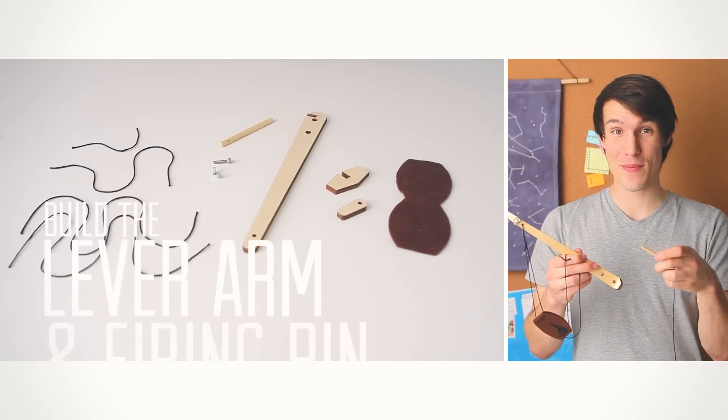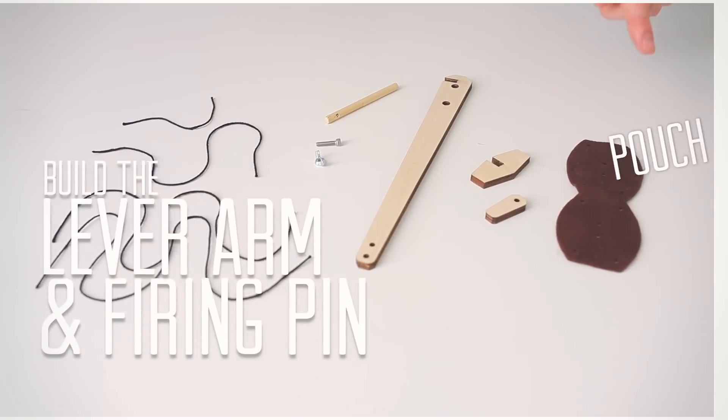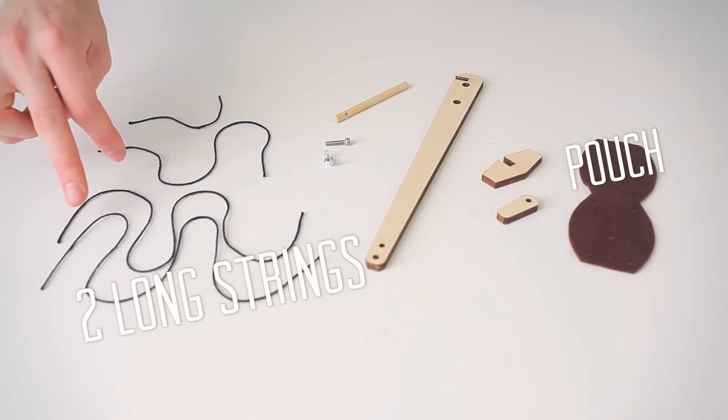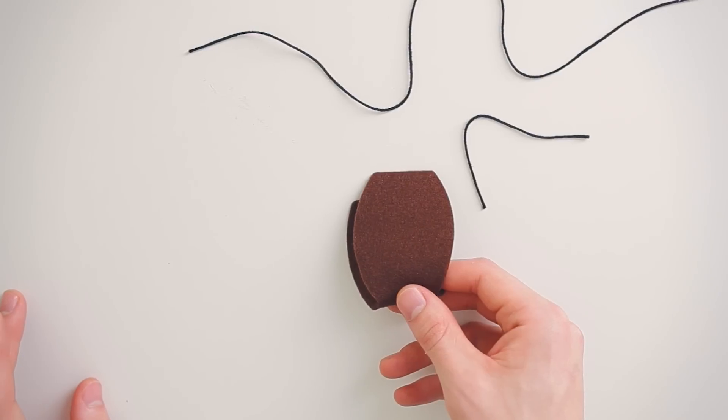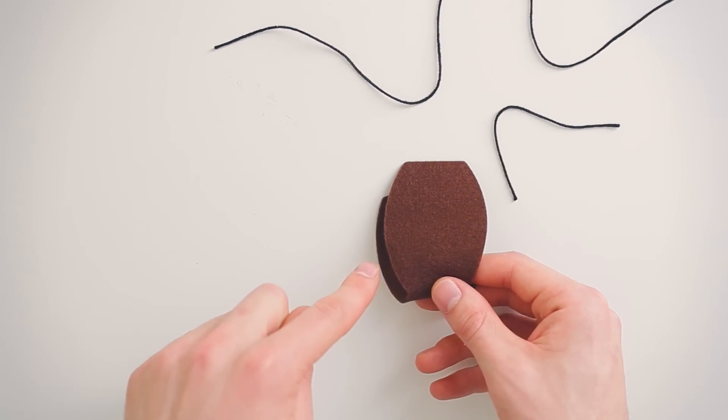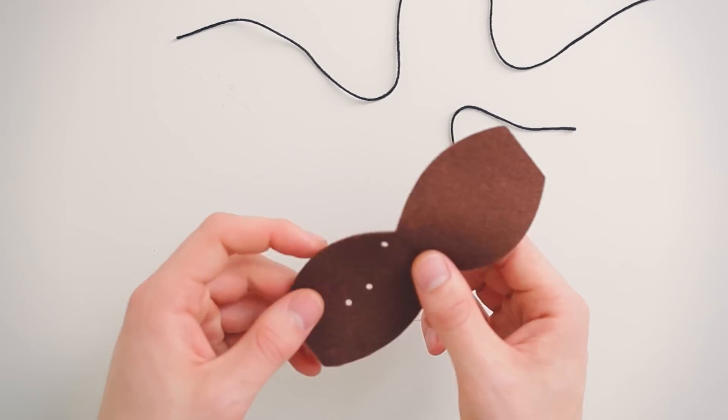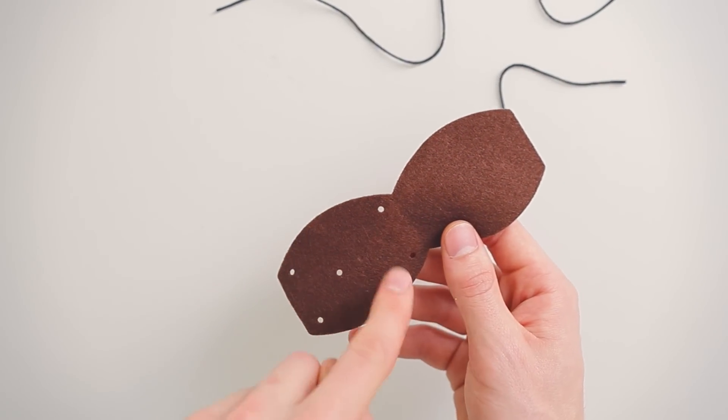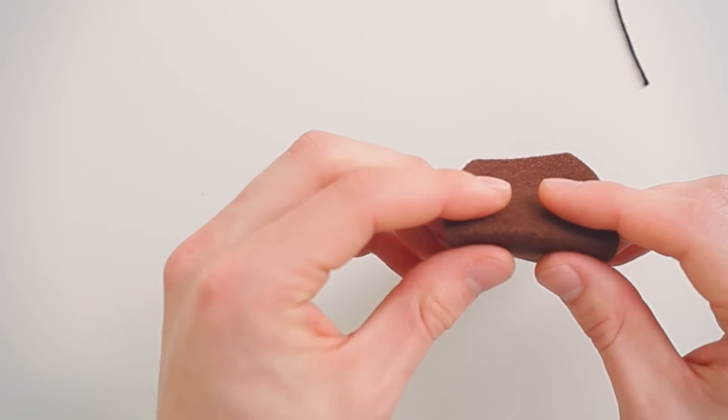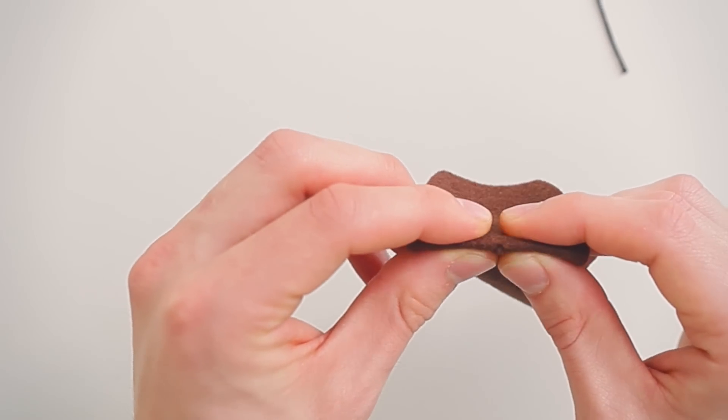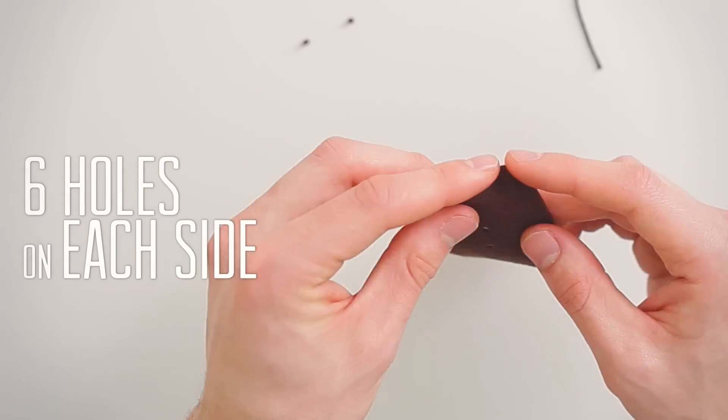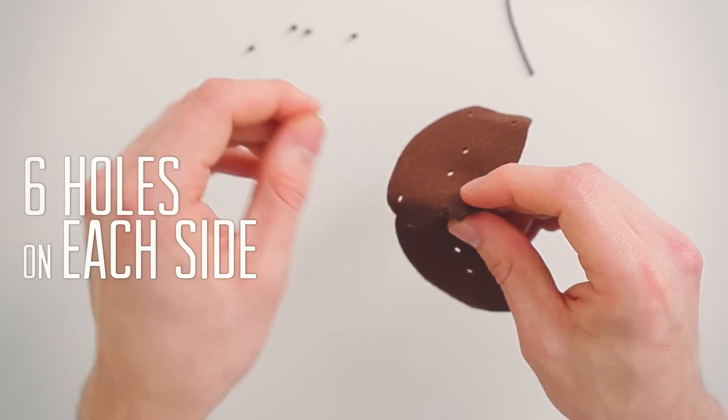Next we're going to build our lever arm and our firing pin. Let's start off with our felt pouch, our two long strings and our short string. When you get your felt pouch there are holes in it. To get the holes try rolling and you'll see that the little circles pop out. In total there should be six holes on each side.